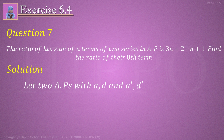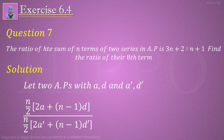तो हमारे पास which implies: we write the formula — [n/2 (2a + (n−1)d)] divided by [n/2 (2a' + (n−1)d')] = (3n + 2) / (n + 1).